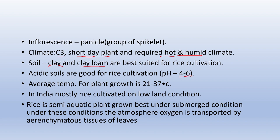The average temperature for rice plant growth is 21–37°C. In India, rice is mostly cultivated in low land conditions. Rice is a semi-aquatic plant grown under submerged conditions. Under this condition, atmospheric oxygen is transported by aerenchymatous tissue in leaves. Aerenchymatous tissue is present in aquatic plants, hydrophytes, and wetland plants. Since rice is semi-aquatic, aerenchymatous tissue is present for oxygen transportation.